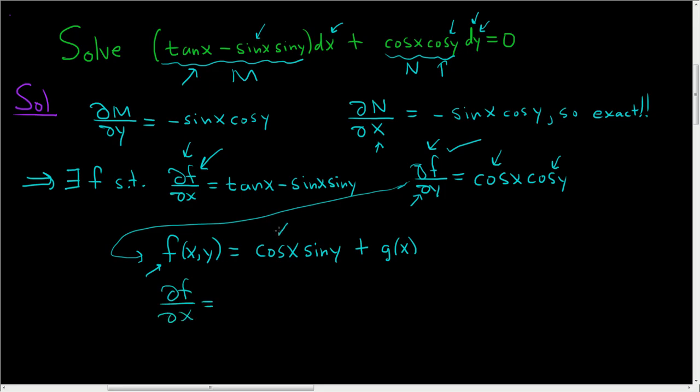Well, the derivative of cosine is negative sine. And then here we have the sine Y, plus little g prime of X. So that's the partial of F with respect to X.